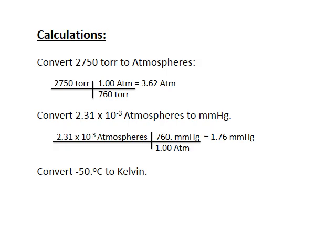Likewise, sometimes we convert from atmospheres into millimeters of mercury. For example, 2.31 × 10⁻³ atmospheres — I put atmospheres in the denominator to cancel them, and millimeters of mercury in the numerator, then multiply through to get 1.76 millimeters of mercury. For temperature, if I have −50 degrees Celsius and want to convert to Kelvin, I add 273, giving 223 Kelvin.